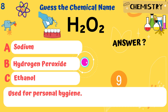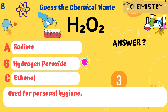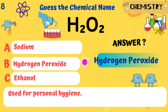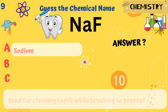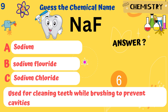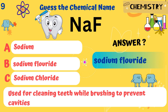H2O2. It is used for personal hygiene. Answer: Hydrogen peroxide. NaF. It is used for cleaning teeth while brushing to prevent cavities. Answer: Sodium fluoride.